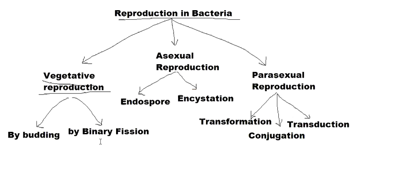So, vegetative reproduction by budding and binary fission; asexual reproduction by endospore and encystation; and parasexual by transformation, conjugation, and transduction. We will study the vegetative reproduction in detail in the next video, and then go to the parasexual and asexual methods. See you in the next video. Bye.